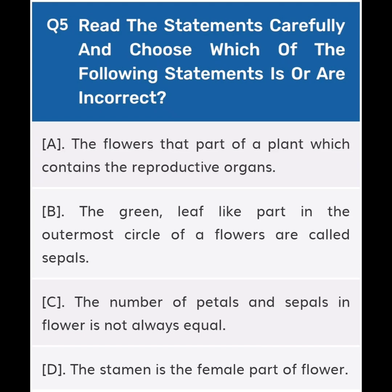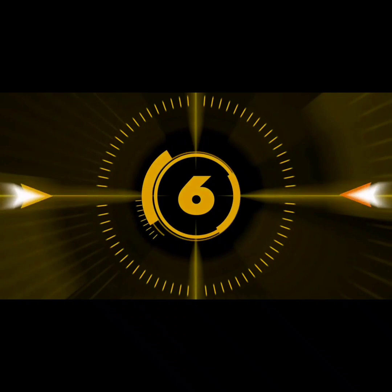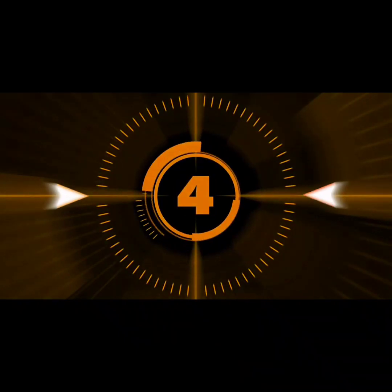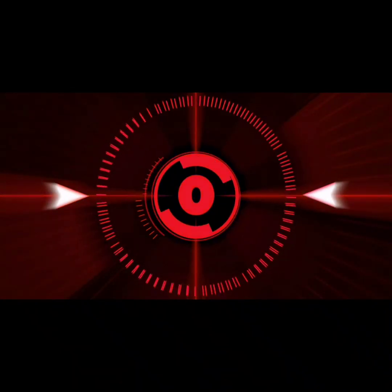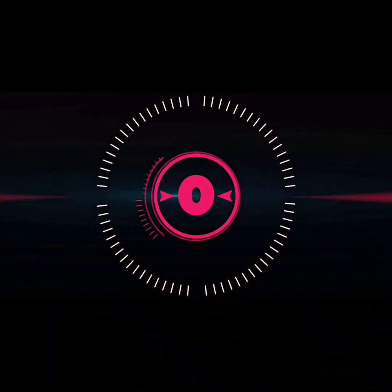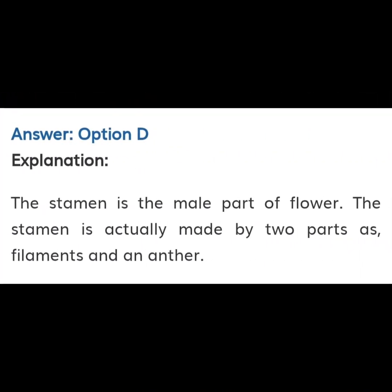Option D: The stamen is the female part of the flower. The right answer is option D. Explanation: The stamen is actually the male part of the flower, made up of two parts — filament and anther.